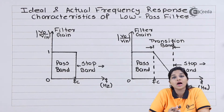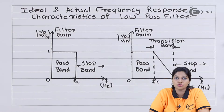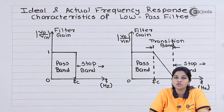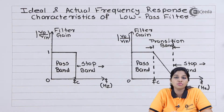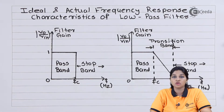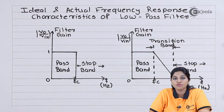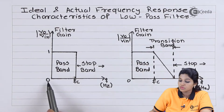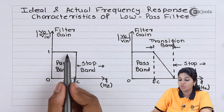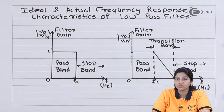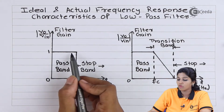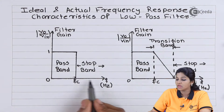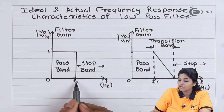Let's understand how the ideal and practical characteristics of a low pass filter look. A low pass filter is basically a filter which passes frequencies below the cutoff frequency fc and blocks all frequencies above fc. The ideal frequency response of a low pass filter consists of: from 0 to fc, the gain equals 1. This is the ideal case. At f equals fc, the gain is suddenly reduced from 1 to 0, and after fc the gain becomes equal to 0.